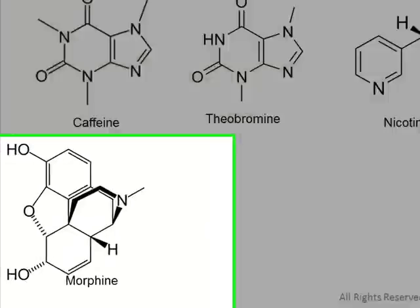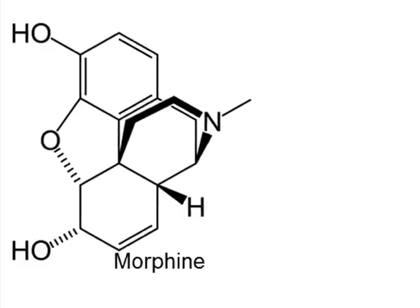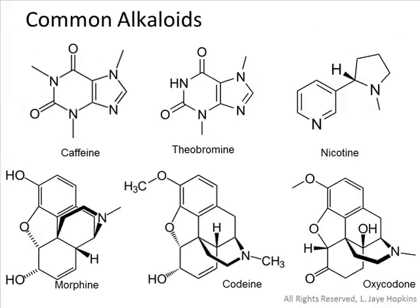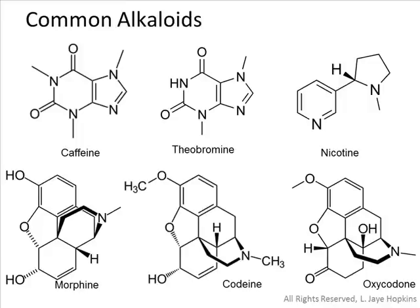Morphine is an example of an opiate, originally derived from opium (from the opium poppy) in the early 1800s, and sold as a pain reliever by Merck as early as 1827. Morphine, codeine, and oxycodone are all closely related opiates with very similar structures — differing mainly in the arrangement of the central nitrogen ring and minor substituent differences. These days, all three substances are produced synthetically in a laboratory.